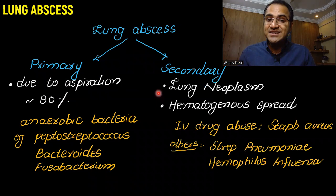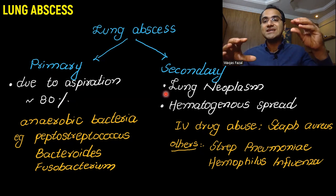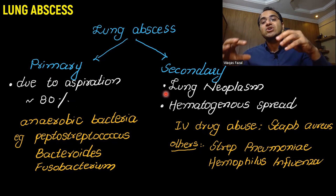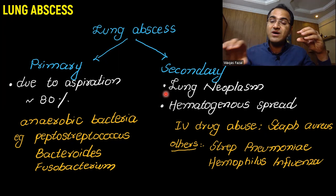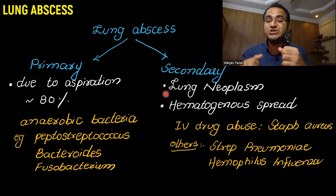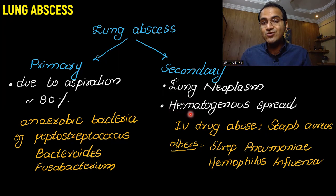Secondary abscesses are comparatively rare. Secondary abscess can occur due to lung neoplasm — any cancer in the lungs. The cancer causes obstruction of the bronchioles and bronchi, resulting in infection, because whenever there is an obstruction of a pathway, behind that obstruction there is always proliferation of bacteria, resulting in abscess formation.